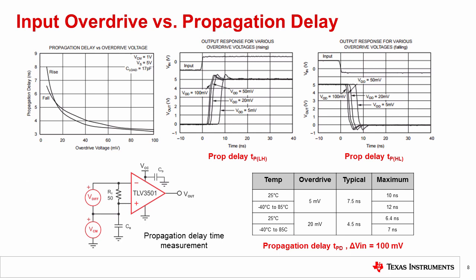Overdriving the comparator input results in a reduced propagation delay time. The reduction is limited, but can be significant as the overdrive is stepped from 5 millivolts up to 100 millivolts. The most significant reductions occur at the lower end of the overdrive range, such as from 5 millivolts to 20 millivolts.